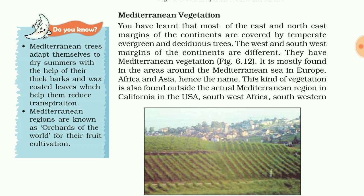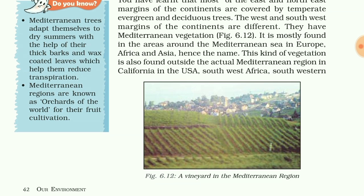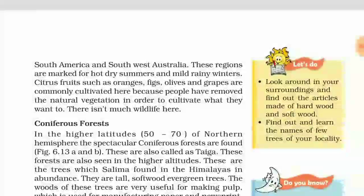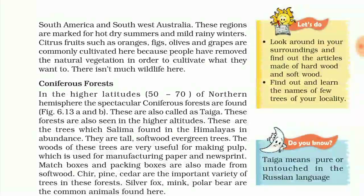Mediterranean vegetation is mostly found in areas around the Mediterranean Sea in Europe, Africa, and Asia — hence the name. This kind of vegetation is also found outside the actual Mediterranean region, in California in the USA, South East Africa, South West South America, and South West Australia.